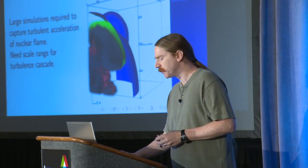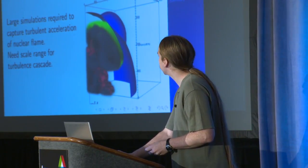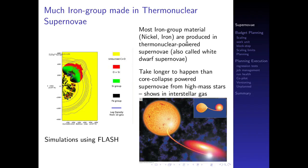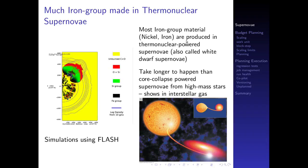That's the intro to my simulation — a reactive compressible fluid dynamic simulation. A lot of the iron group material in us and in the Earth is actually made in this kind of supernova. There are two kinds: one formed when a high-mass star ends its life and its center collapses — a core collapse-powered supernova. The kind I'm talking about is a thermonuclear-powered supernova, where the energy source comes from thermonuclear reactions. The iron group material produced is actually the dominant source of iron group material in the Earth. My simulations use FLASH.